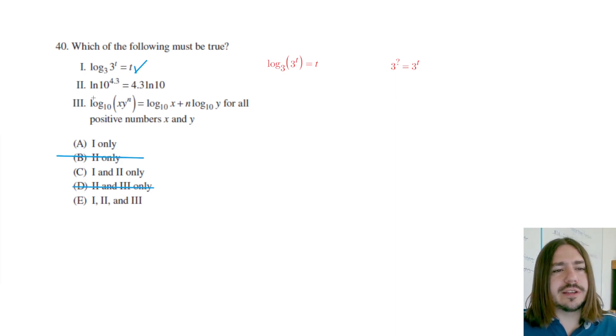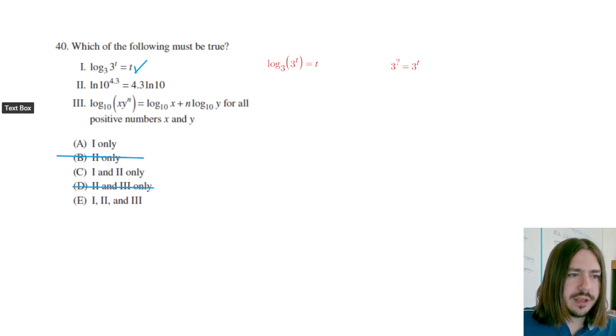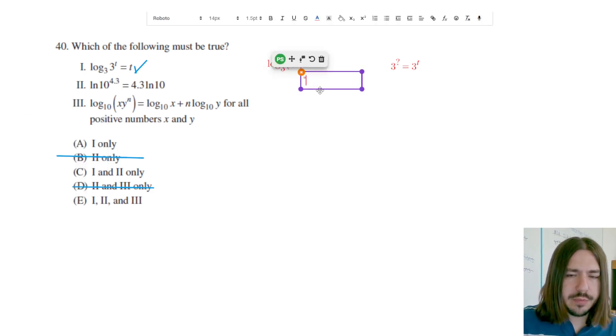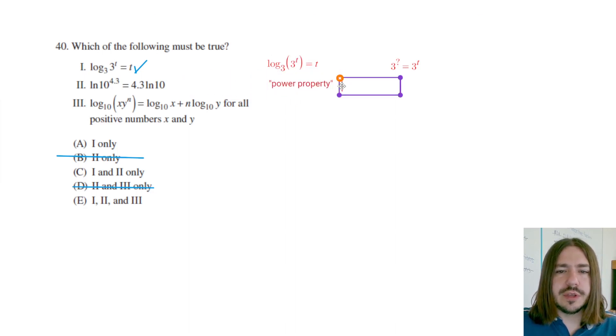Okay, part II says the natural log of 10 to the power of 4.3 is equal to 4.3 times natural log of 10. Yeah, that's also true. We've got what's called the power property, and you can look this up if you want a little bit more detail. It's called the power property, and there's a couple different power properties out there, but this is with regards to logarithms.